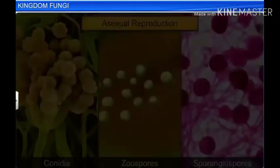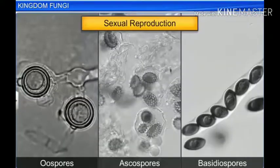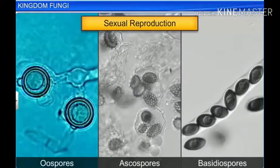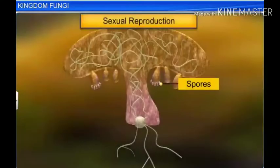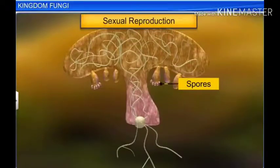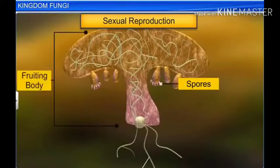They also reproduce sexually by either oospores, ascospores, or basidiospores. All these spores are produced in structures called fruiting bodies.